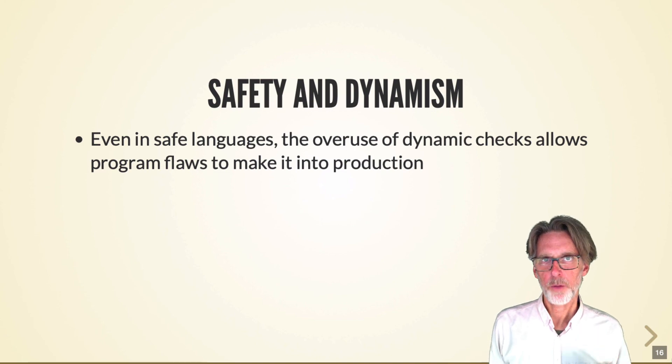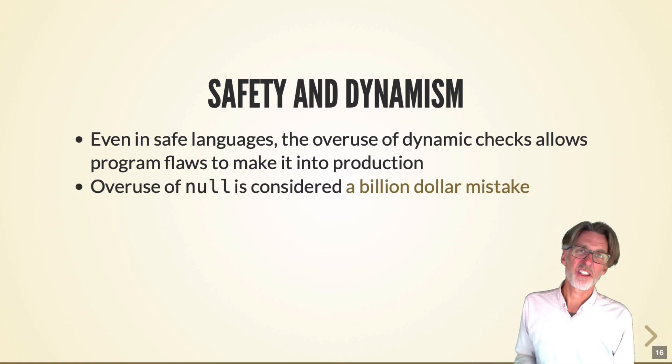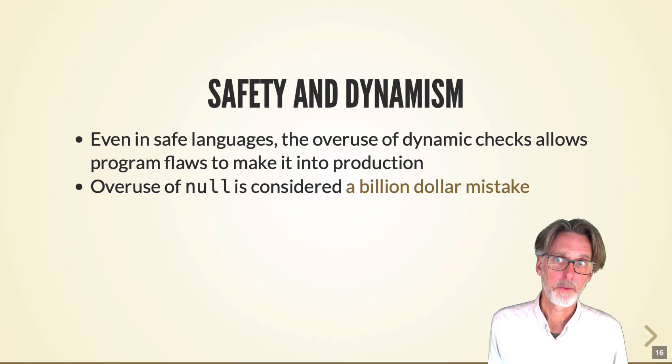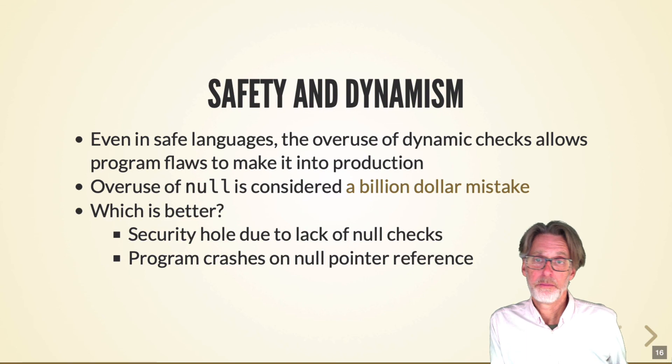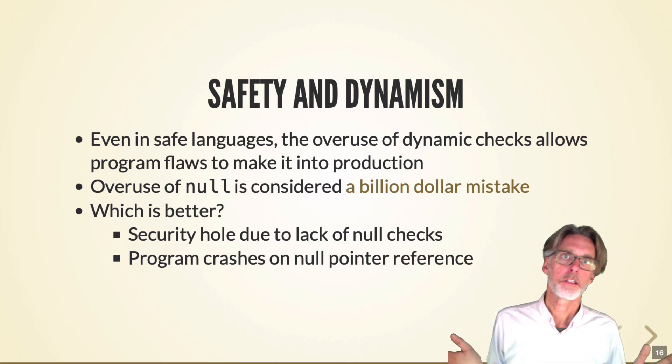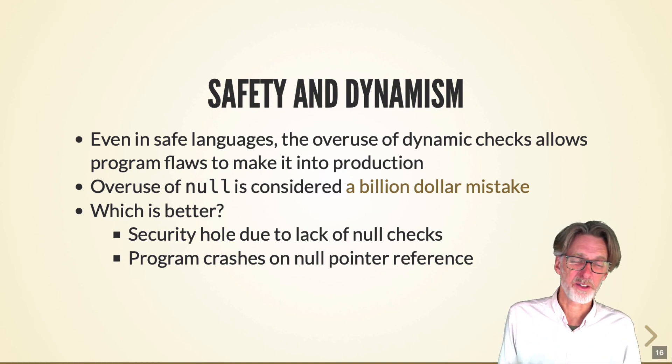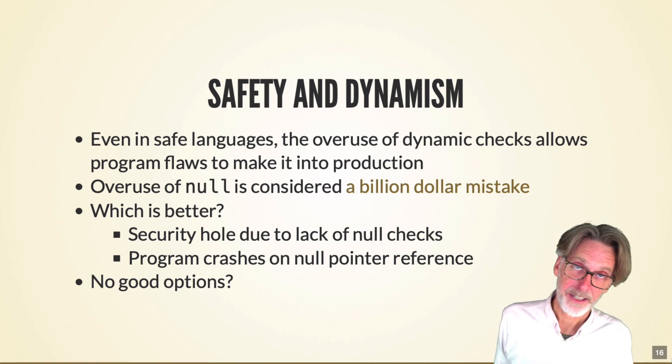But, dynamic checks help a language prevent security flaws. But, the overuse of dynamism can cause problems to endure in our code. Because we're not going to check them, so we have this dynamic error. And, an example of this is the use of null. So, Tony Hoare, who invented null, considers it his billion dollar mistake. And, you can see his lecture on the subject there. And you end up with this choice. I guess it's better that we don't have a security hole. Java forces checks on null. So, if you ever try to dereference a bad pointer, you will get an exception. But, if that's not expected in the flow of the program, the program can just crash. And, those crashes are preferable, I suppose, to security holes. But, they're still not great. Is there no good option? We'll look at something called option types in a later lecture.